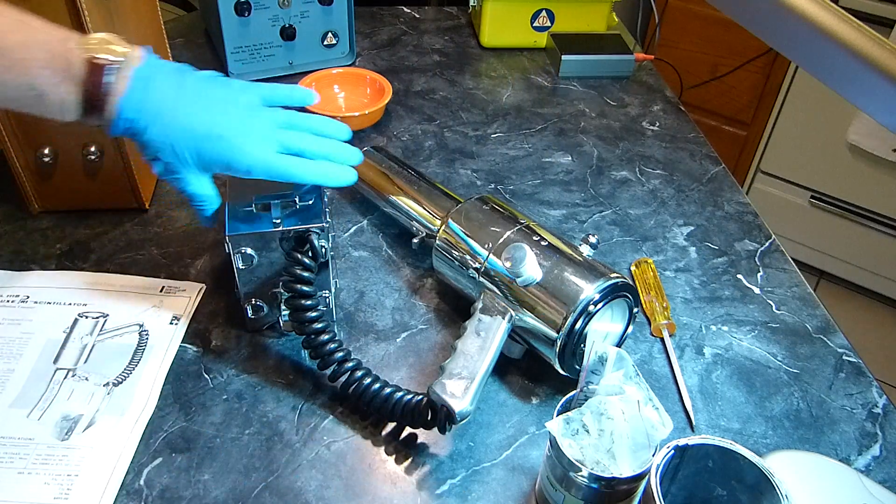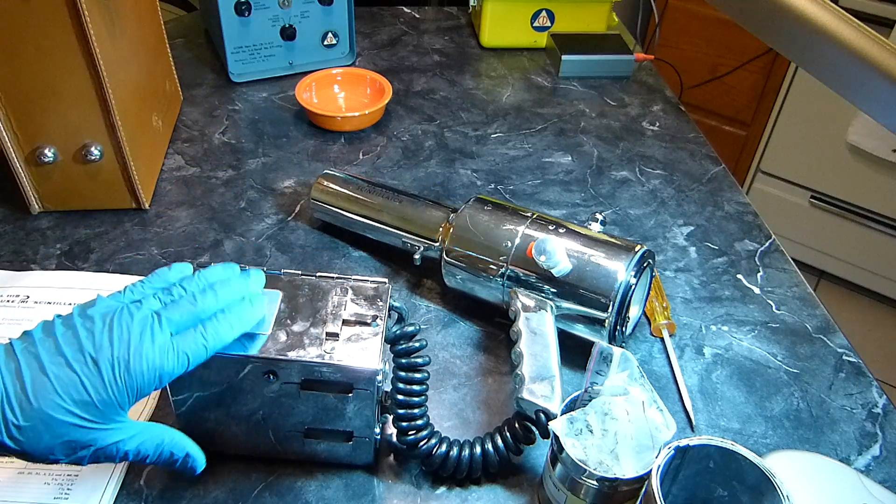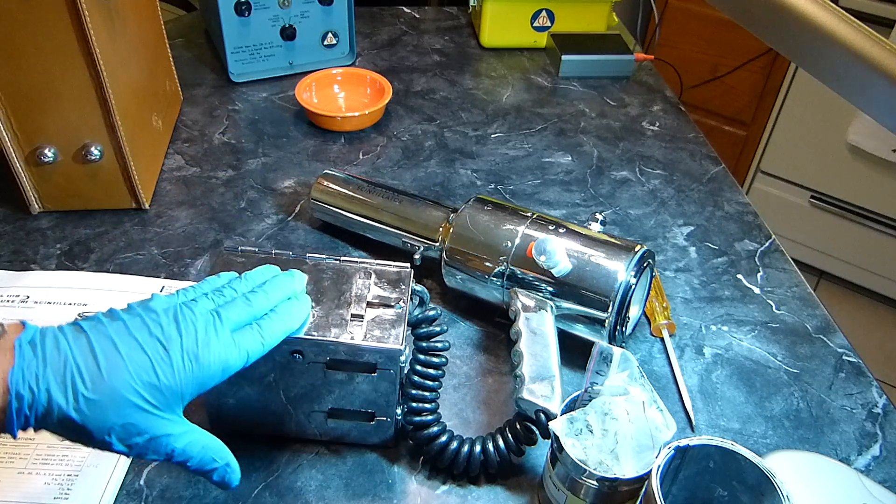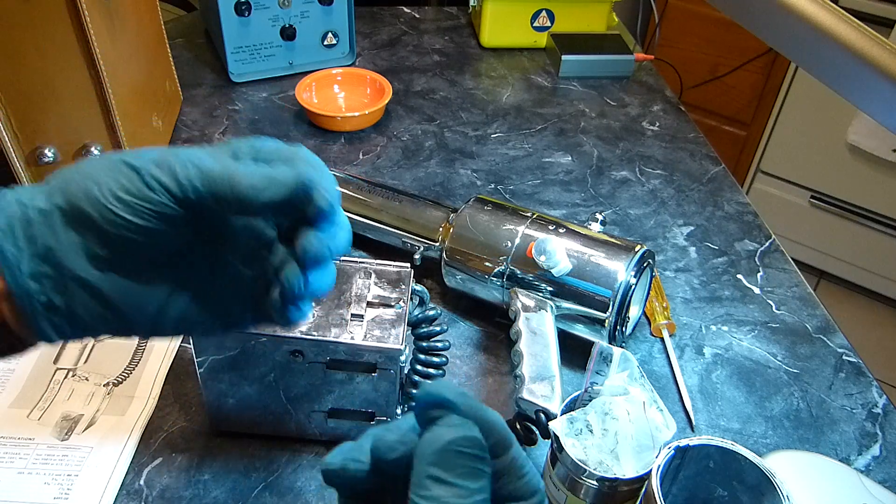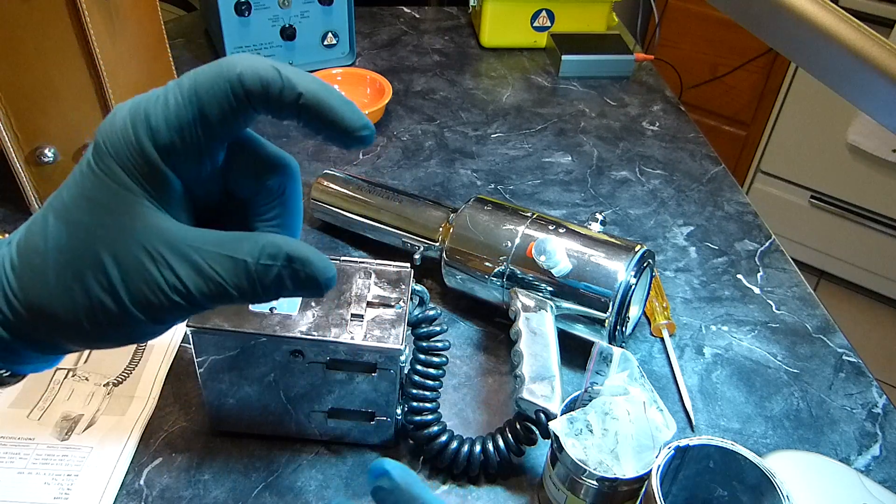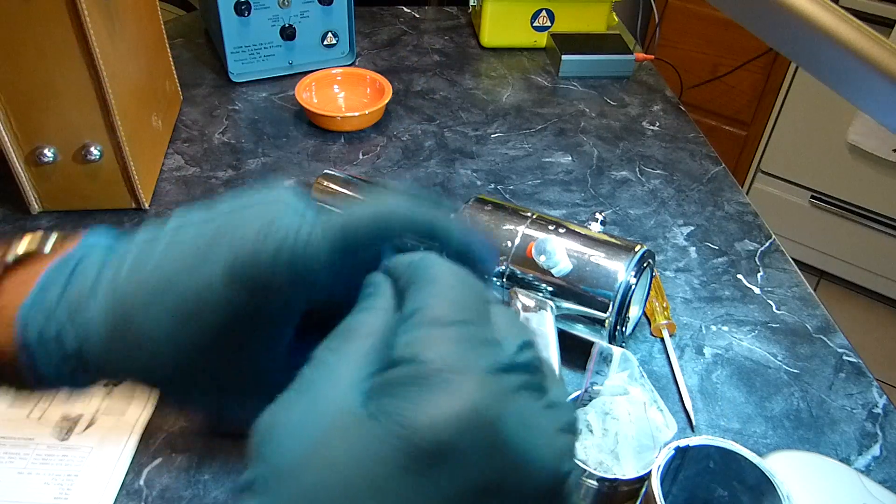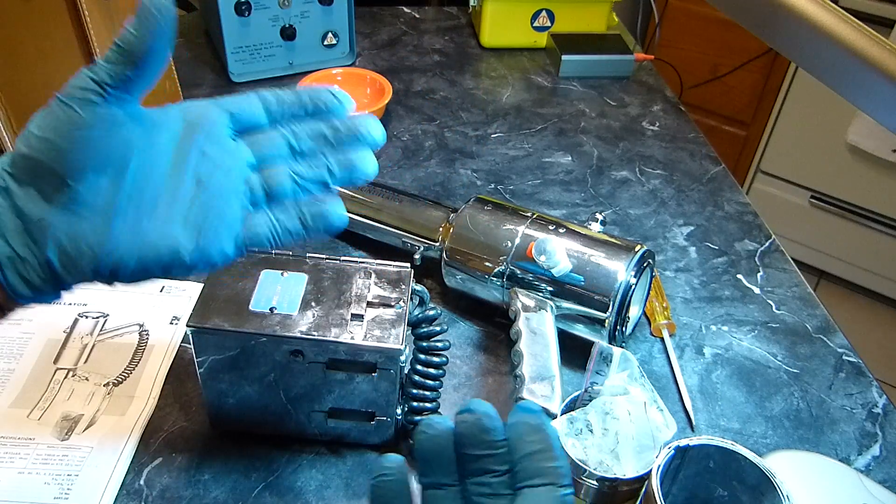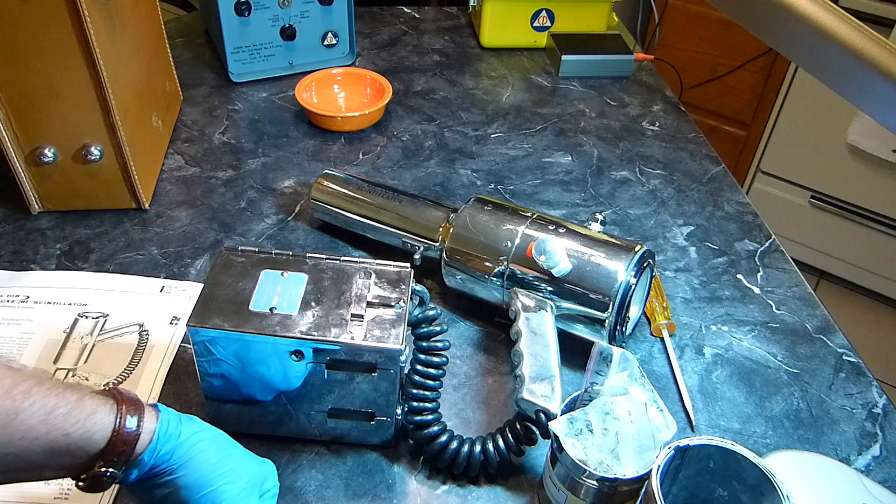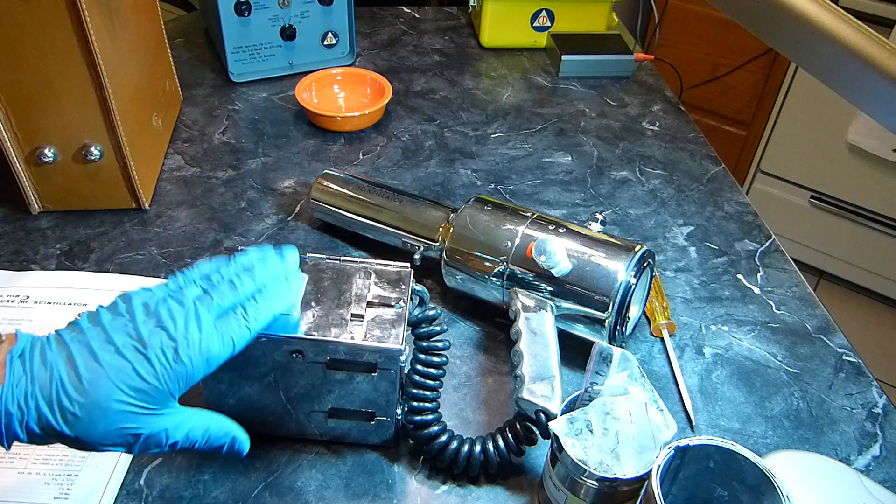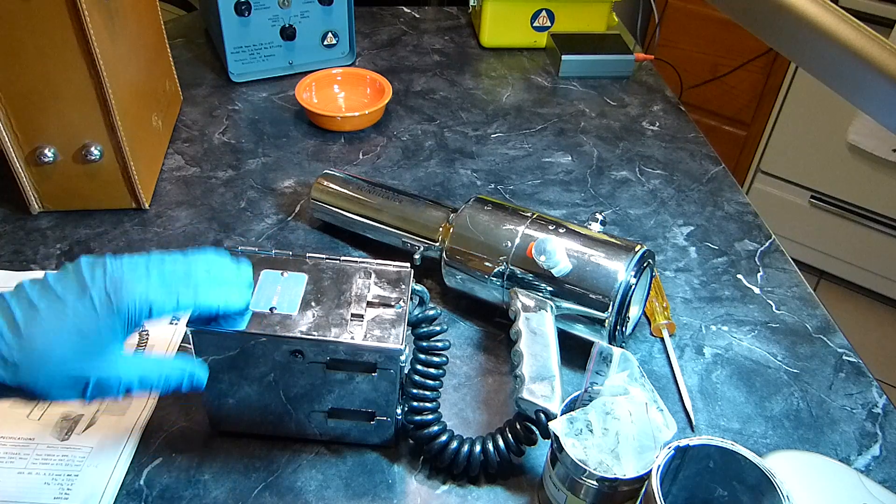But if nothing else you can get out of this, if you run across instruments that need batteries like the 67.5 volt, the 22.5, you just take 9 volt batteries, and you know how they have the male and the female, you just click them together and you can put them all in series. And if you can get pretty close, plus or minus 2 or 3 volts either side, they usually work. That's how I resurrected this guy right here.